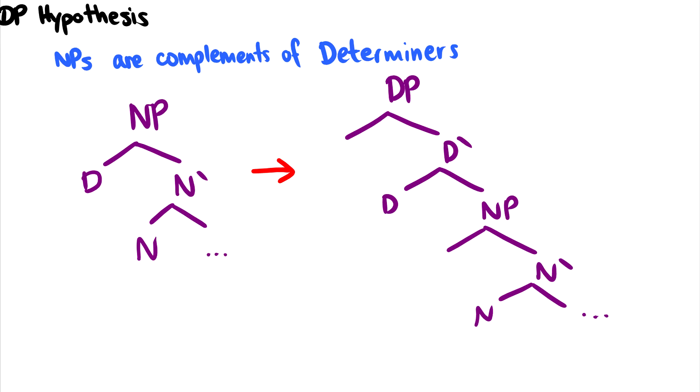In this video, we're going to talk about the DP hypothesis, and the DP hypothesis states that NPs are complements of determiners in determiner phrases.